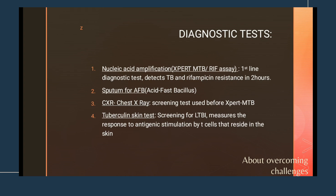There are several diagnostic tests for tuberculosis. The first is the nucleic acid amplification test, also called Xpert MTB/RIF — where RIF stands for rifampicin. This is the first-line diagnostic test used to detect tuberculosis and rifampicin resistance simultaneously. It can detect Mycobacterium tuberculosis and determine whether the individual is resistant to rifampicin. Results are available within two hours.